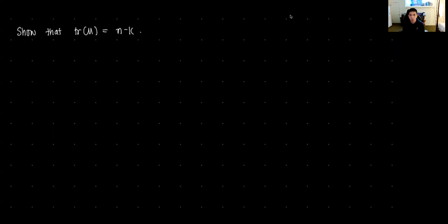So hi everyone, and welcome to this video on just a simple proof to show that the trace of the annihilator matrix, or the orthogonal projection matrix, is equal to N minus K.